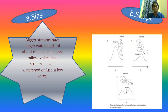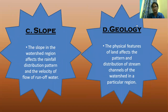In long and narrow watersheds, water takes longer time to drain into the river and therefore has a longer lag time. In a circular shape basin, there is a shorter lag time and higher peak flow. So narrow watersheds take longer time while circular shapes take shorter time with higher peak flow. Next is Slope.